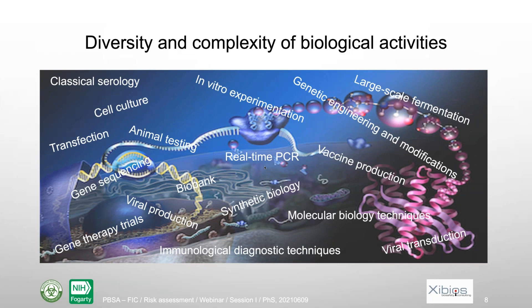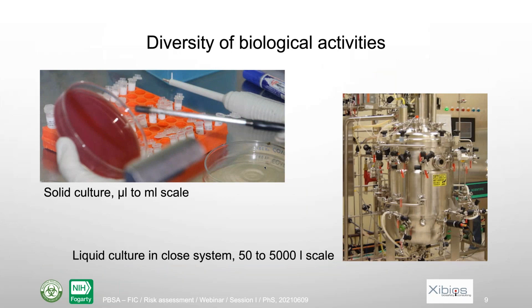This illustrates the many different domain activities we do in biological labs — they are totally different, and the level of risk can also be very different. For example, solid culture at a laboratory scale involves handling milliliters or microliters. On the other hand, a bioreactor or biofermenter is a closed system where we can produce like five thousand liters of concentrated bacteria or virus. Of course, this is totally different — the situation, the risk, and the required measures will need to be different.